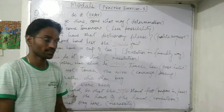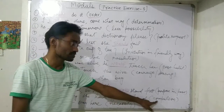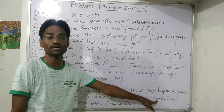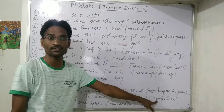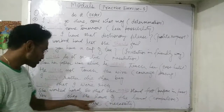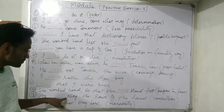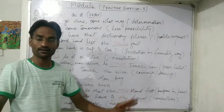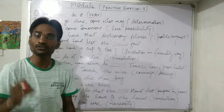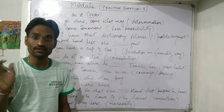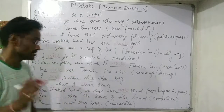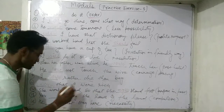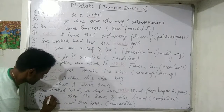Next: 'You obey the laws of the land' — this shows compulsion. There is no alternative — you are compelled to do it. For compulsion, we use 'must.' So: 'You must obey the laws of the land.'